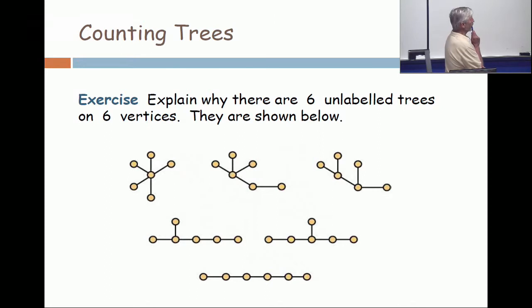The one in the upper left corner is what's called a star. There's one vertex in the middle and all the others are leaves and they're all adjacent to it.